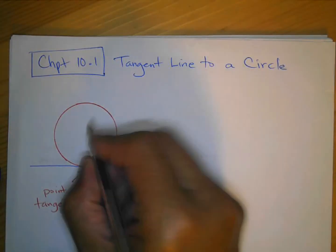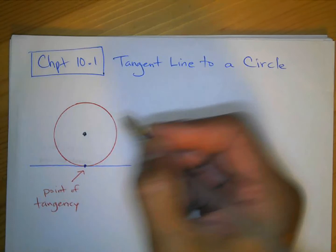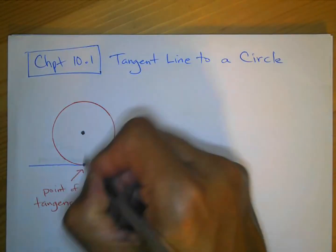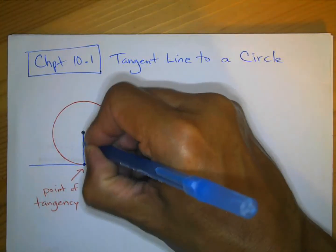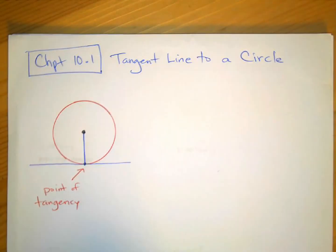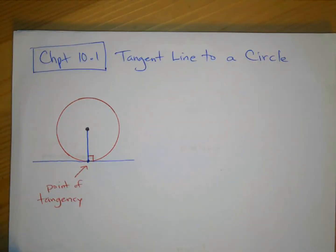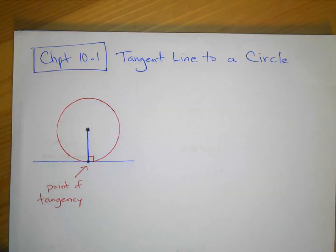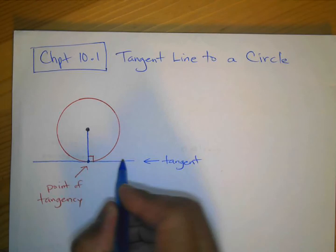If you look at the center of the circle — circles have a center, a radius, and a diameter — what's true about the center and the point of tangency is that a radius drawn from the center to that point creates a 90-degree angle. It's perpendicular to the tangent line.